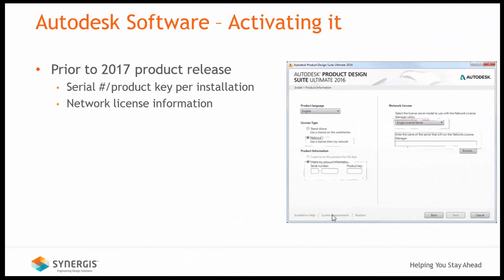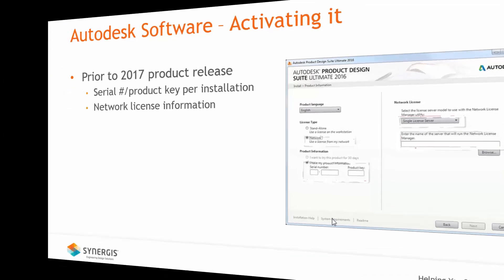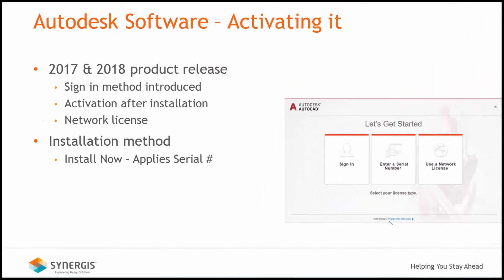Prior to the 2017 product release, when the software was installed or a deployment was created, the serial number and product key required for activation had to be entered as part of the install process. For the 2017 and 2018 product line, the selection of the activation type occurs after the product is installed, meaning the installation process no longer requires activation information before continuing. With the introduction of the 2017 product line, the sign-in method was introduced and was only available under certain conditions. Users are presented with a 'Let's Get Started' dialog showing three options to activate the product. Under certain installation methods such as 'Install Now' or through a deployment, the 'Let's Get Started' dialog may not be present since it's known which method will be used.